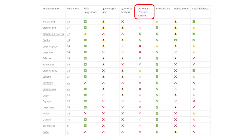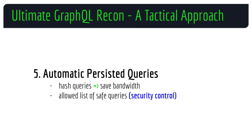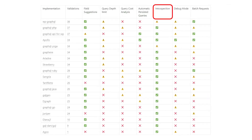Automatic persisted queries — this is usually used to save bandwidth by hashing queries, but it can also be used as a security check by having an allowed list of safe queries. We can see that in most implementations it's disabled or not supported.